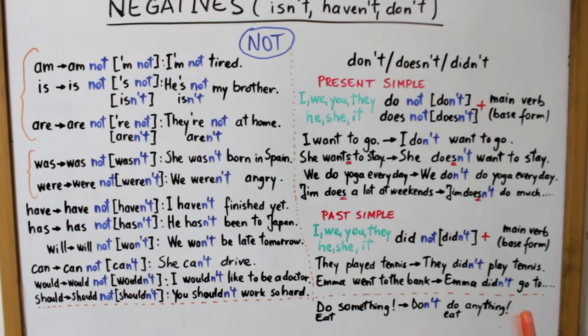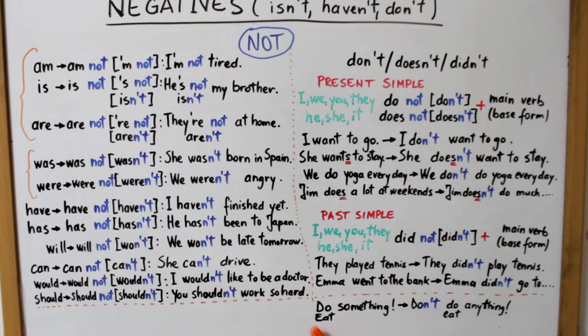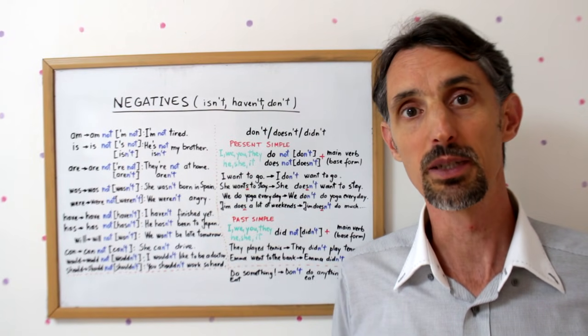O ultimă mențiune referitoare la forma de negativ don't. Aceasta este folosită și în cazul verbelor la imperativ acel mod verbal care se folosește pentru a transmite un ordin sau o rugăminte sau un sfat în mod direct. De exemplu do something, fă ceva, poate deveni la negativ don't do anything, nu face nimic. Sau eat something, mănâncă ceva. Negativul ar fi don't eat anything, nu mânca nimic.